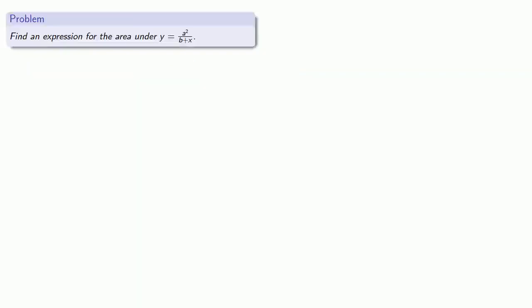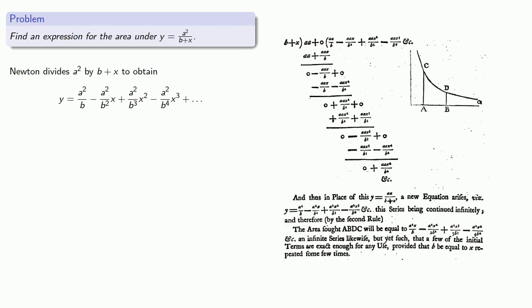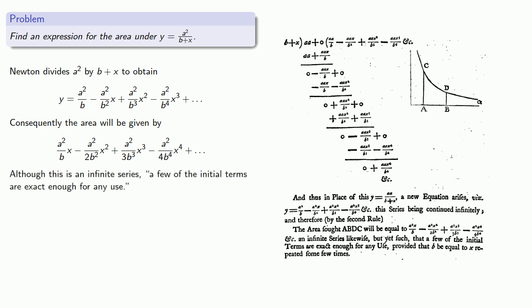And so this allows him to do things like find an expression for the area under the curve y equals a squared over b plus x. Now, although the binomial theorem is known by now and Newton could expand this using the binomial theorem, he doesn't. And instead, he divides a squared by b plus x to obtain an infinite series. And essentially performs termwise integration to give an expression for the area. And although this is an infinite series, he notes that a few of the initial terms are exact enough for any use.